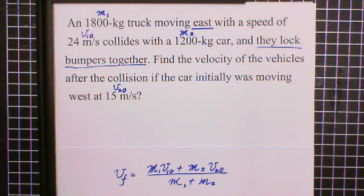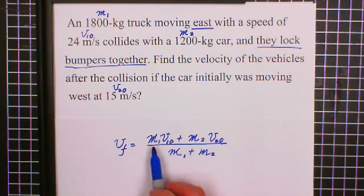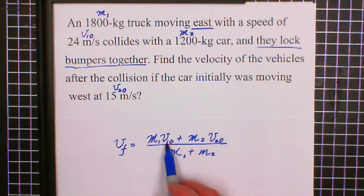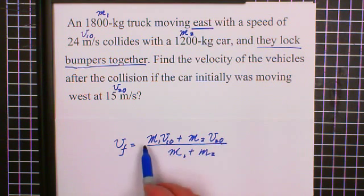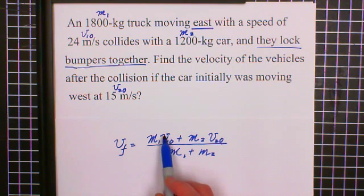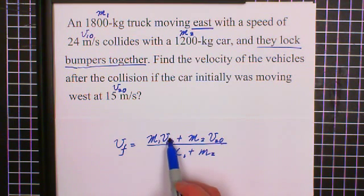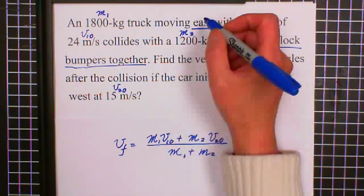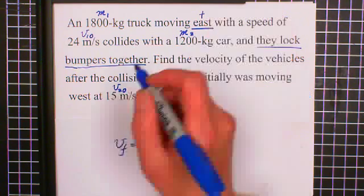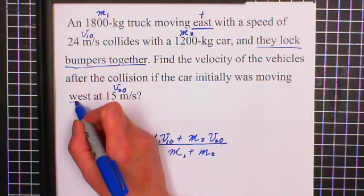When we're working with the conservation momentum, we need to pay attention to the direction of velocity. Because in this formula, we can see M1, M2 is scalar, only magnitude. But the V1 initial, V2 initial, is a vector. So in one dimension, we need to think about, if they have the same direction, we can both set positive. But they have opposite direction, we need to set one is positive, the other is negative. Let's set east is positive, then west is negative.